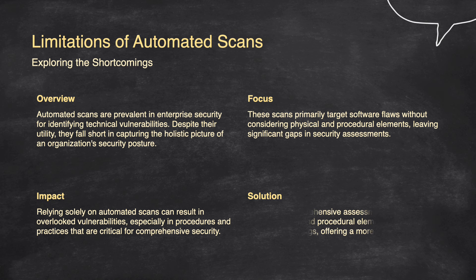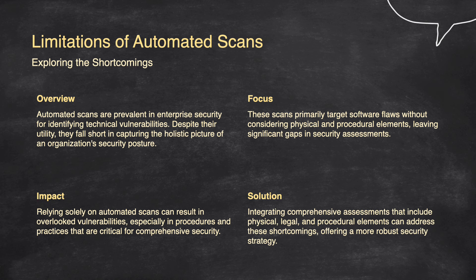The solution is integrating comprehensive assessments that include physical, legal, and procedural elements to address the shortcomings of automated scans, offering a more robust security strategy. By going beyond just technical flaws, these assessments consider how issues impact interconnected systems and identify weaknesses in processes, human behavior, and physical security. This holistic approach ensures that all potential vulnerabilities are detected and mitigated, providing a more complete and effective security evaluation that combines automated scans with human expertise and manual assessments.